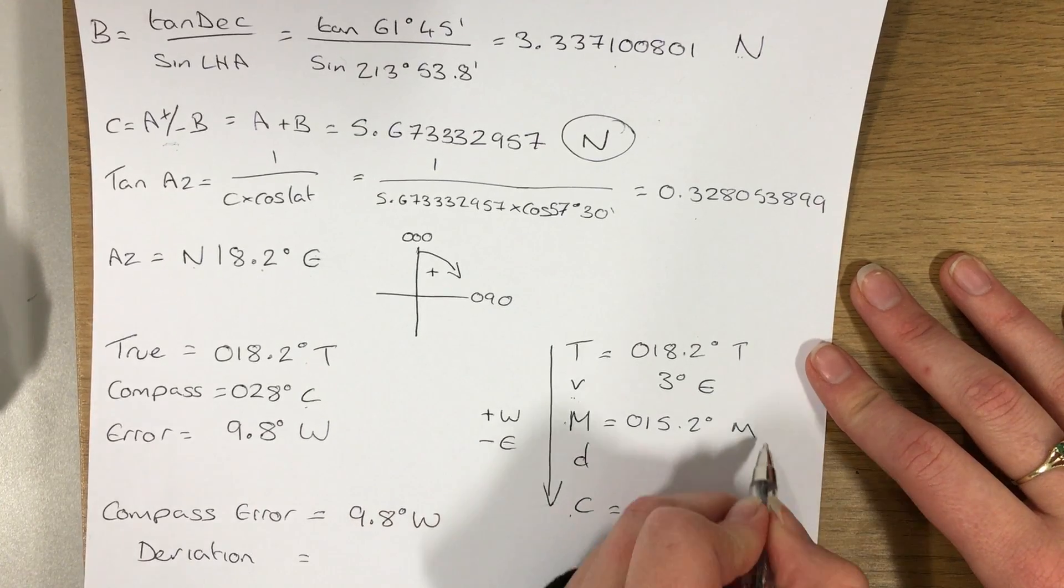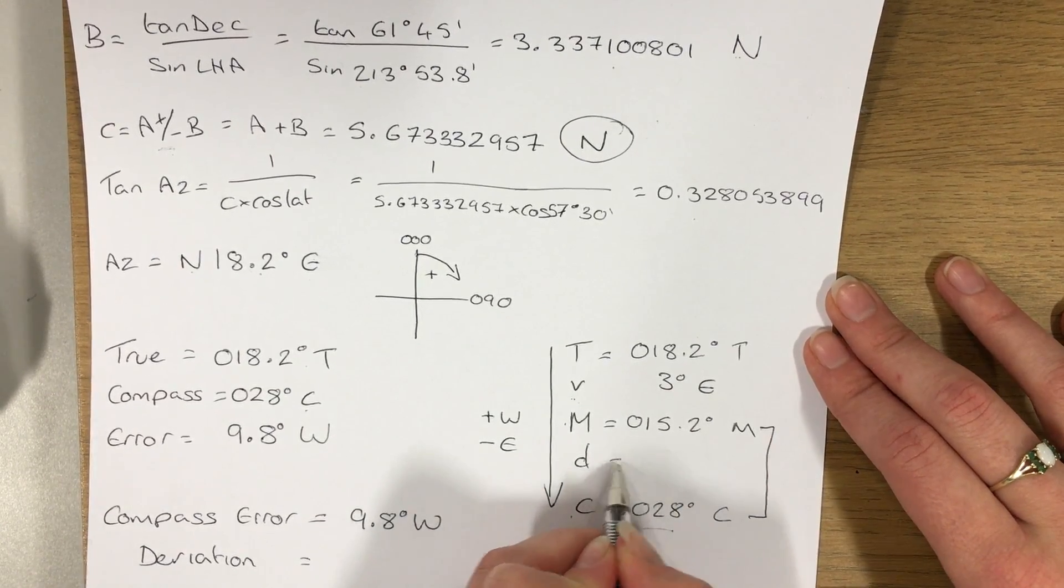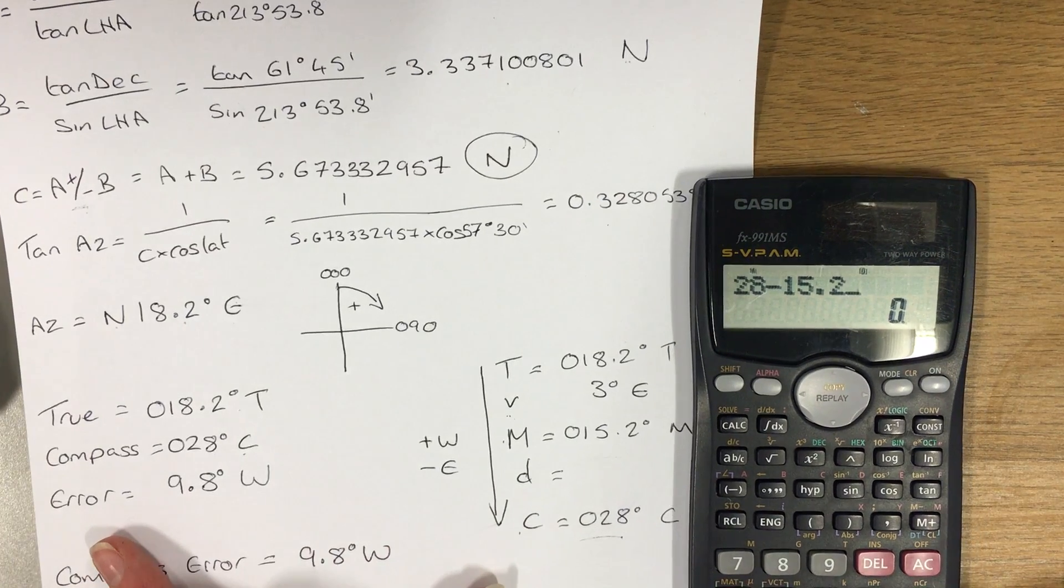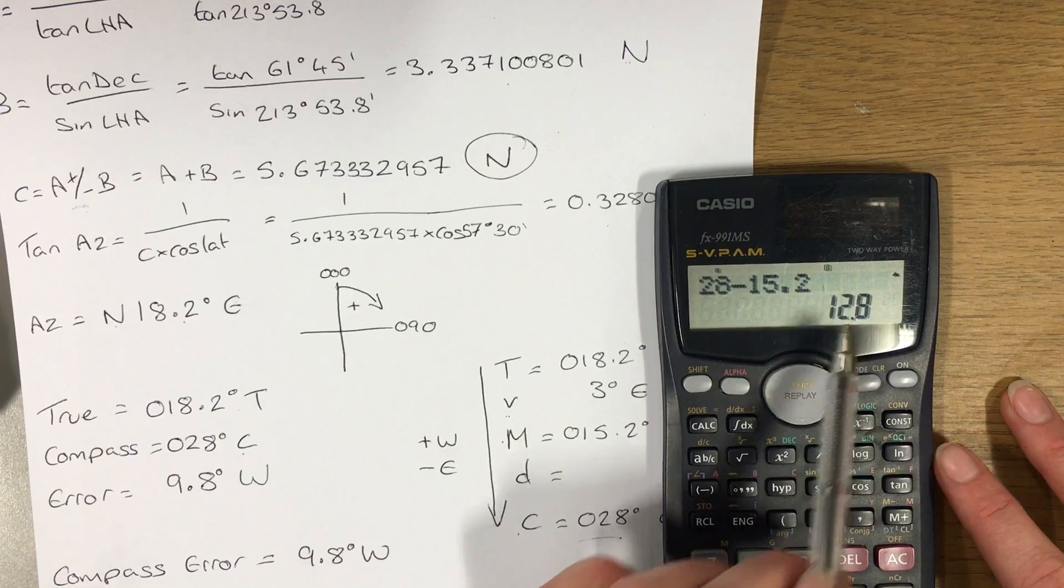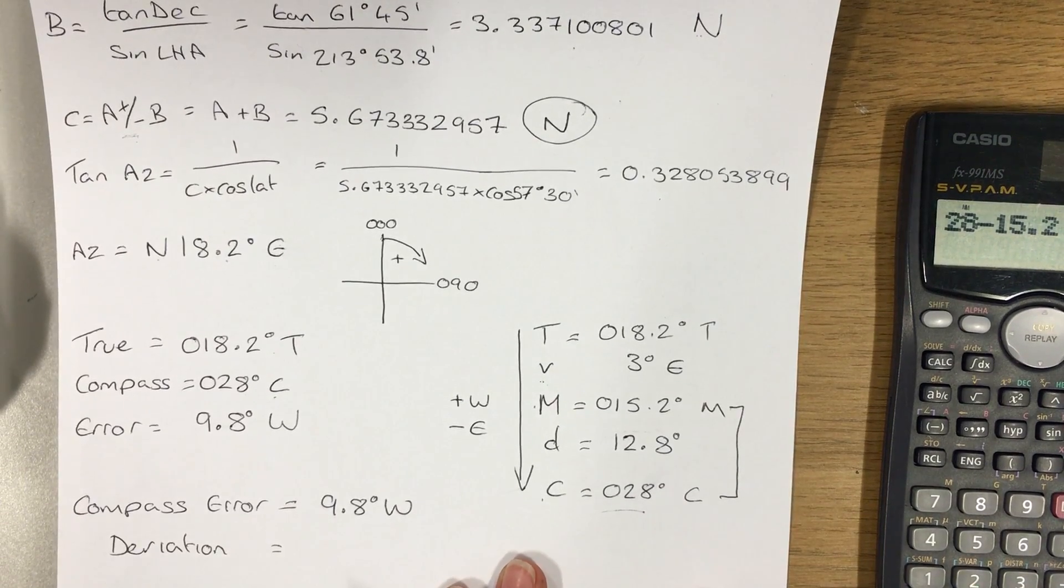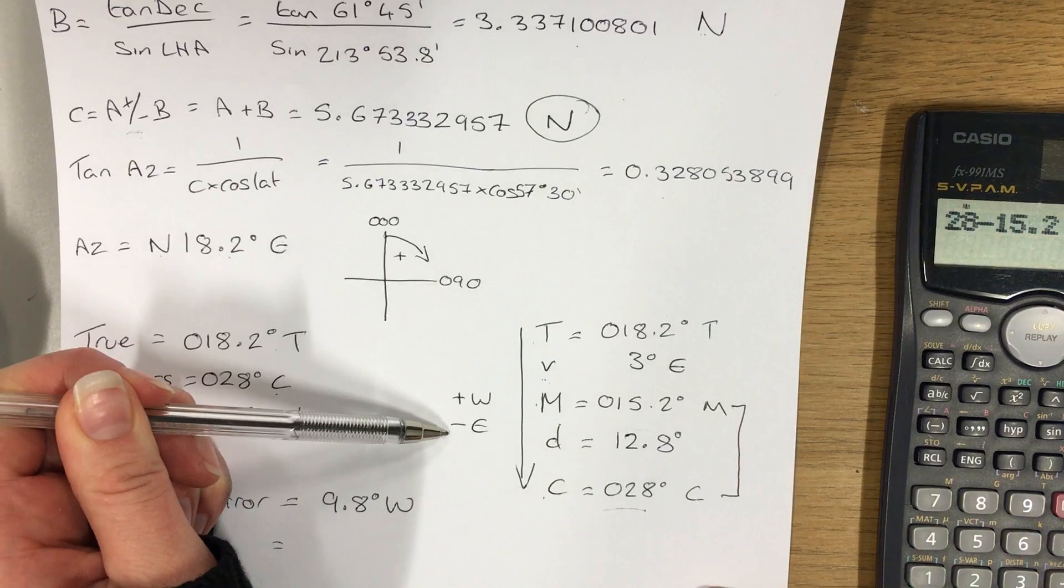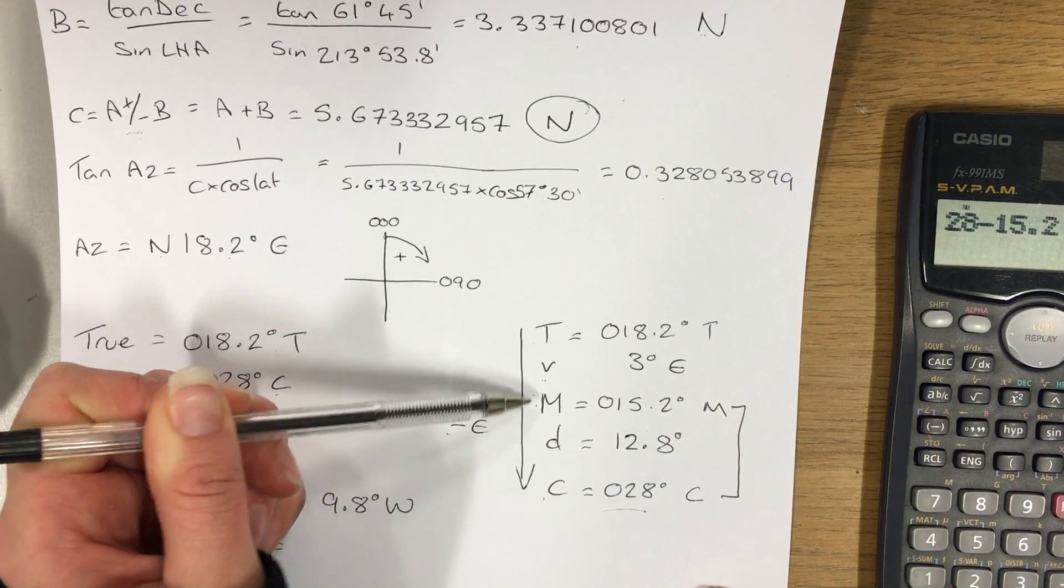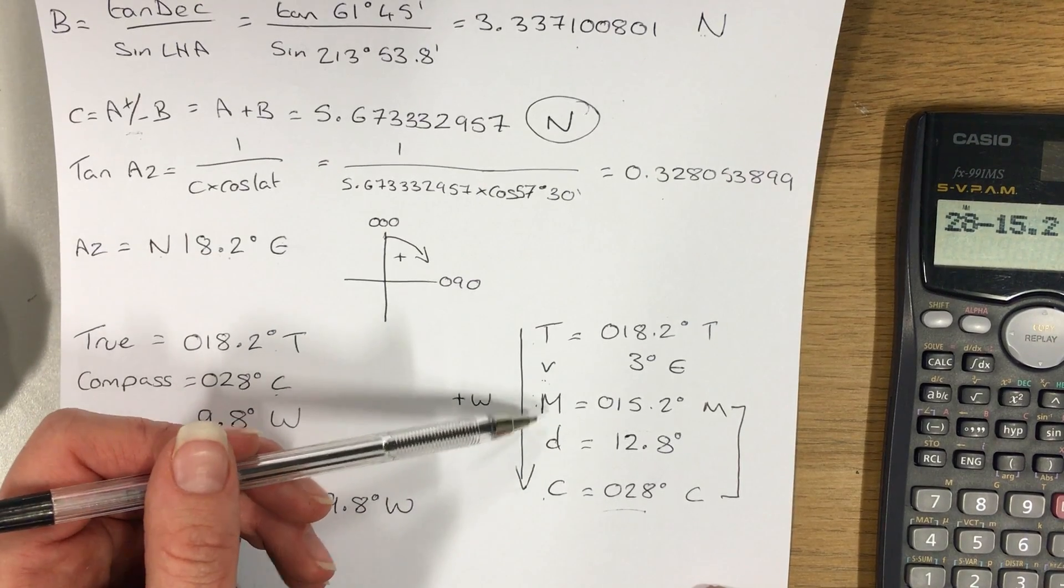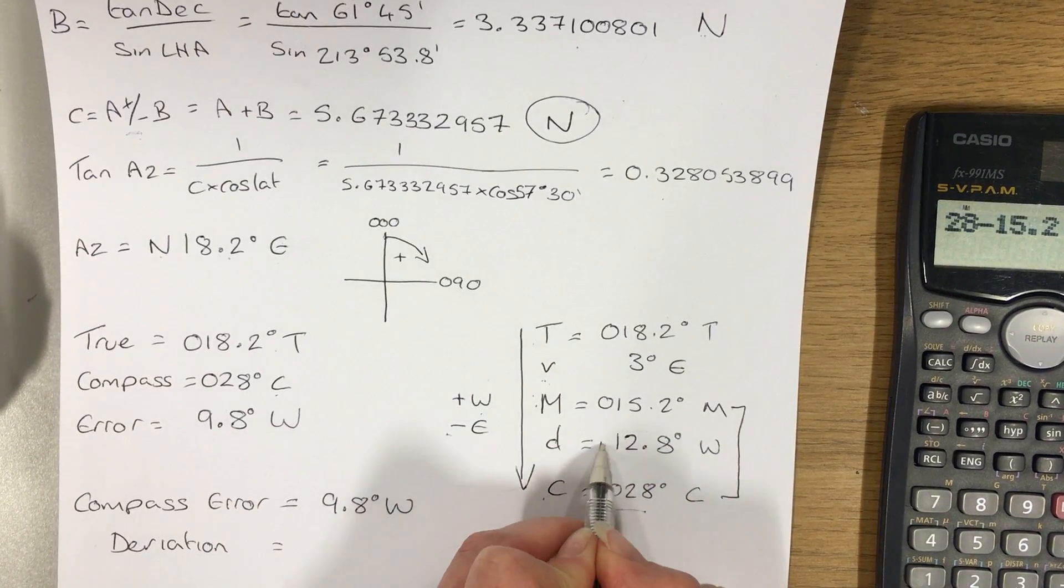Now the difference between magnetic and compass, that is my deviation. So my compass minus this, or the difference between the two, will give me the value for deviation. So my deviation is equal to 12.8. Now I need to give this a name as well. So TVMDC, I'm working downwards, so I'm adding westerly values and minusing easterly values. In order to get from magnetic to compass, my values need to increase. They're getting bigger.